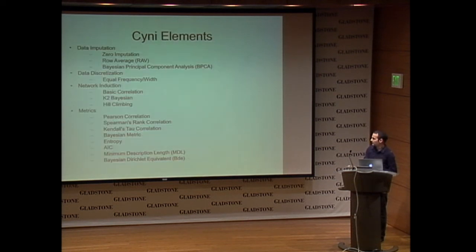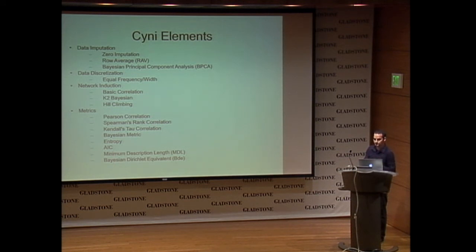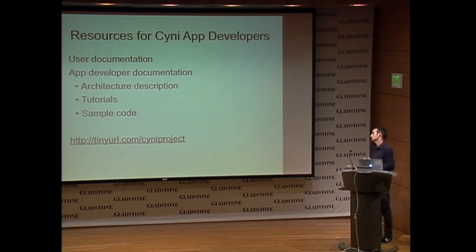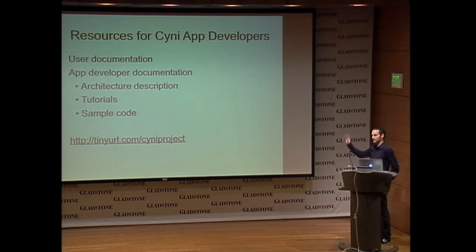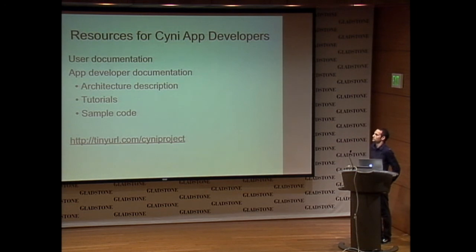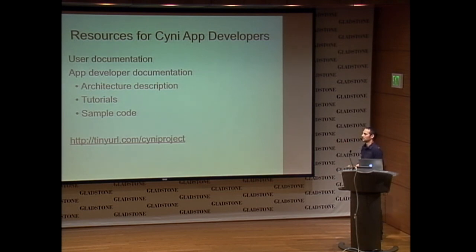So far, that's what's available in the first beta release of SIGNE: data imputation, discretization, and several metrics — all of which can be extended through the SIGNE framework. To help future users and app developers, we are providing documentation at a URL. There is user documentation explaining all the algorithms, how to use them, and all the parameters. For future app developers willing to use the SIGNE framework to implement their techniques, we also provide an architectural description, tutorials, and even a sample 'hello world' code — so they only have to insert their algorithm and it should work.